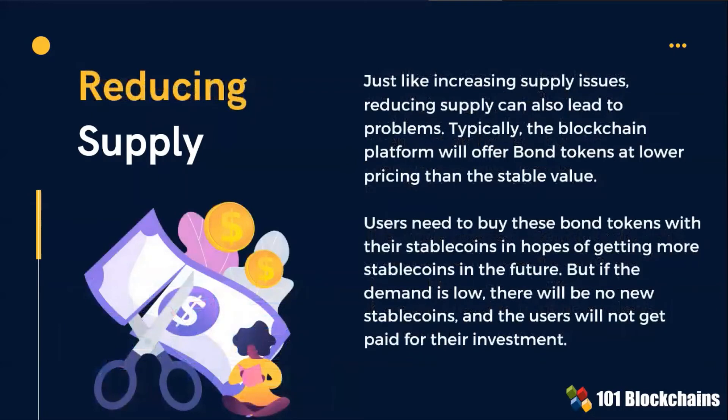Reducing supply: the algorithm may offer bond tokens at lower pricing than the stable value, with the objective of reducing the supply of stablecoins. Users need to buy bond tokens with their stablecoins in exchange for getting new minted stablecoins. If the demand is low, there will be no new stablecoins and users will not get paid for their investment.